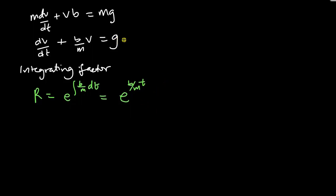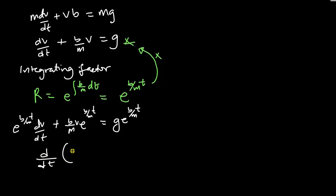Let's multiply this equation by the integrating factor. This now should be exact. And you can actually check that the left-hand side of this equation is d/dt of V exponent B over M times t.